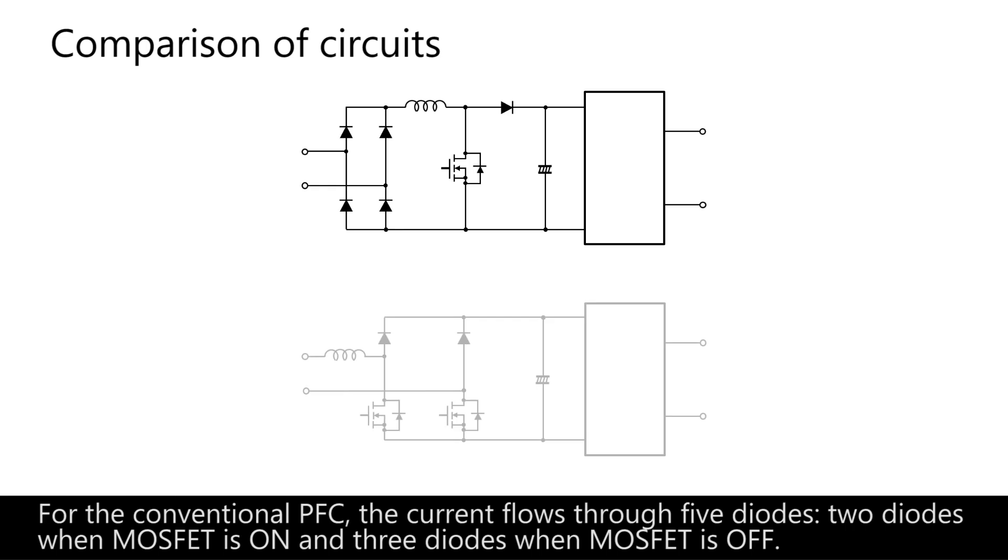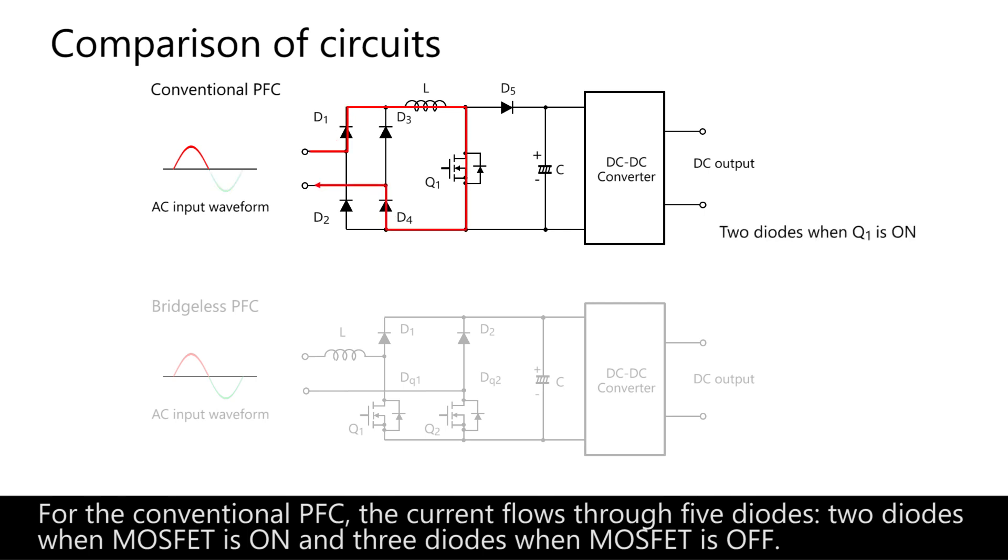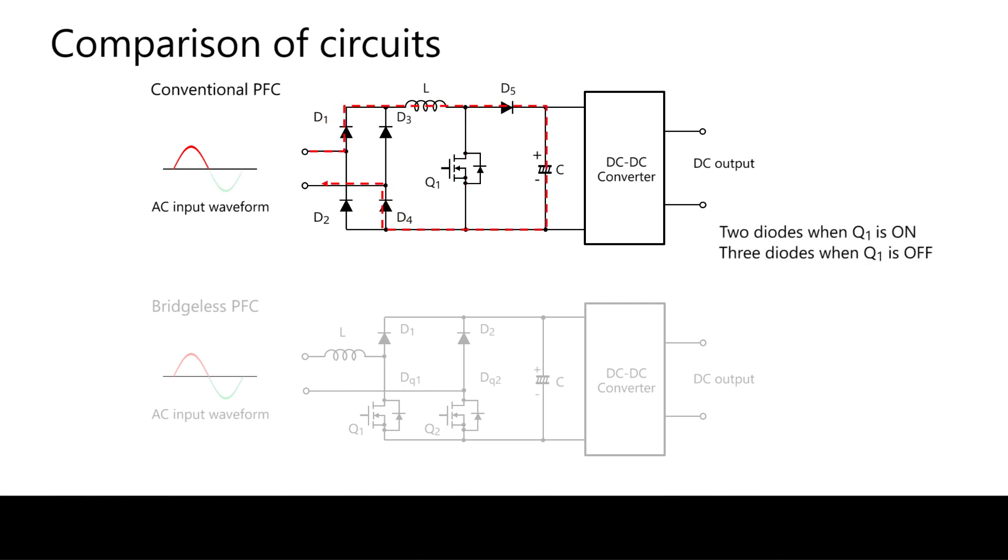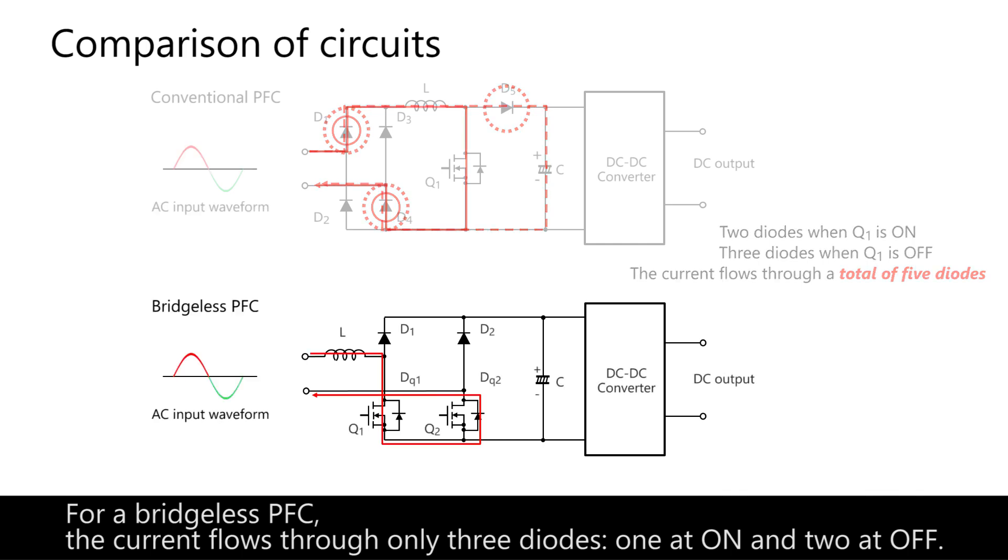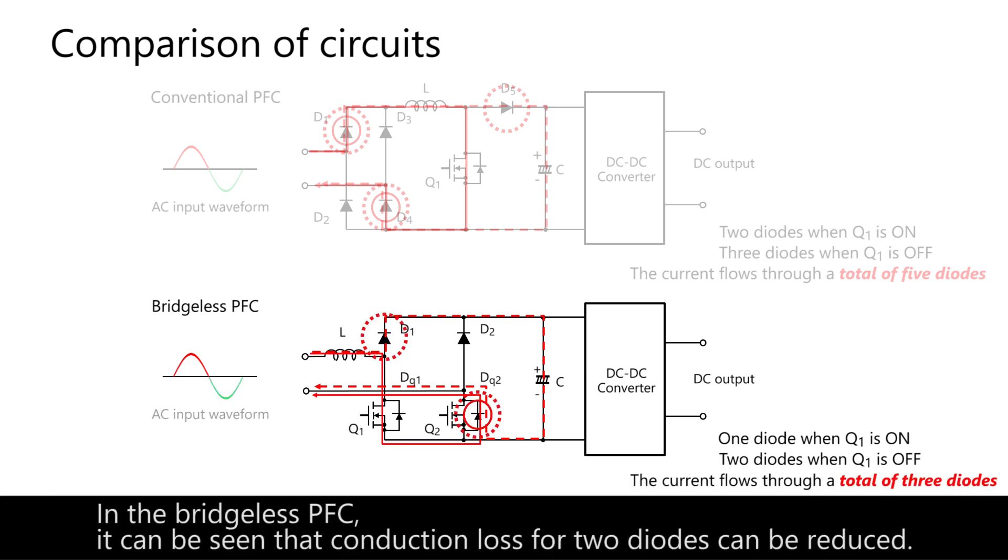For the conventional PFC, the current flows through 5 diodes: 2 diodes when MOSFET is on and 3 diodes when MOSFET is off. For a bridgeless PFC, the current flows through only 3 diodes: 1 at on and 2 at off. In the bridgeless PFC, it can be seen that conduction loss for 2 diodes can be reduced.